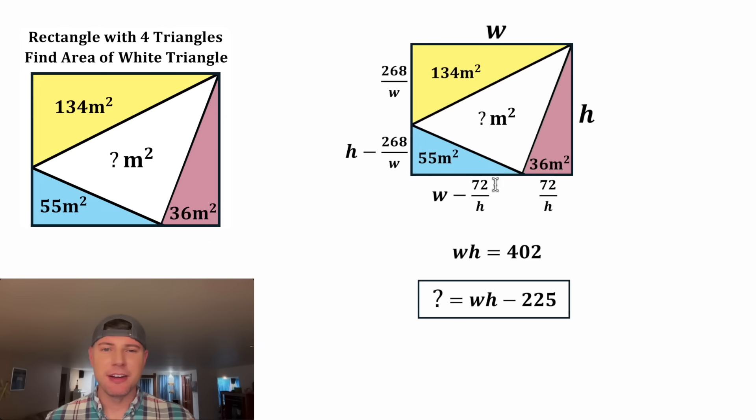And now we can find the area of our white triangle. In the place of the WH, let's plug in 402. And 402 minus 225 is 177. Let's smush everything together, give it a label, and that is the answer to our question. And it's already in a box. The area of this white triangle is 177. How exciting.